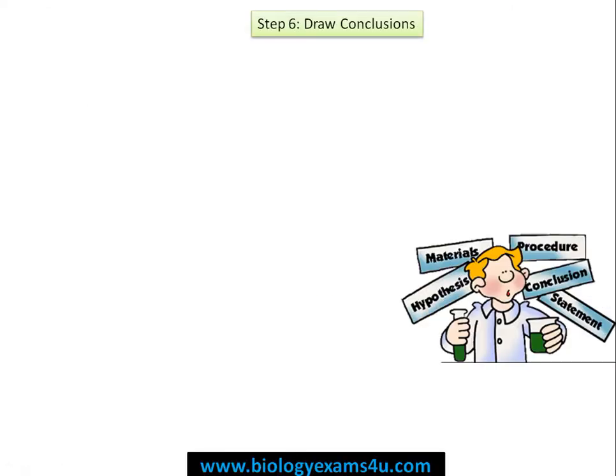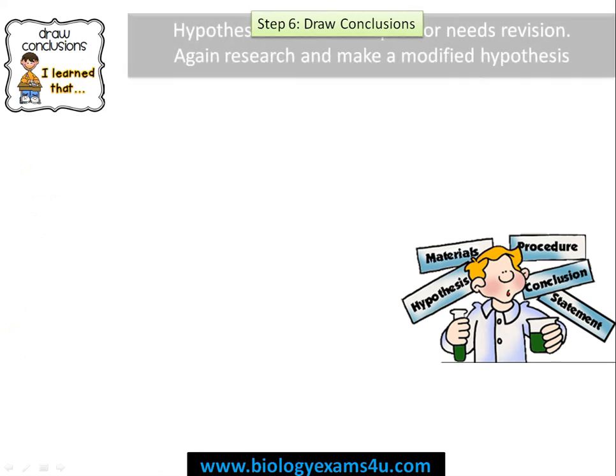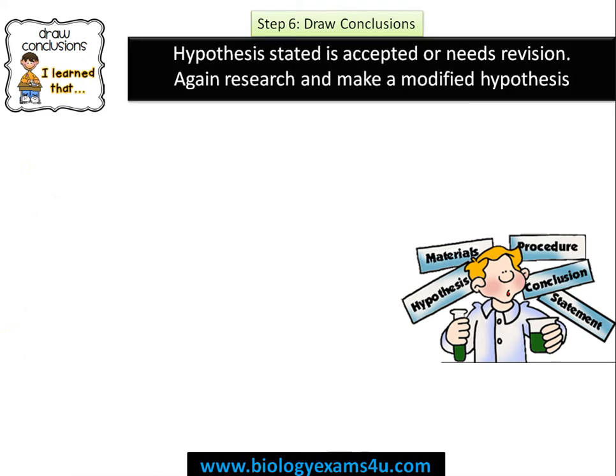Step six is draw conclusions. We need to reach a conclusion after analysis of the results. Often the conclusion is that the hypothesis stated is accepted or rejected. If the hypothesis is rejected, then we need to move to step two again — do a thorough review of literature, frame a more solid hypothesis, and carry out the same procedure again from step three onwards.